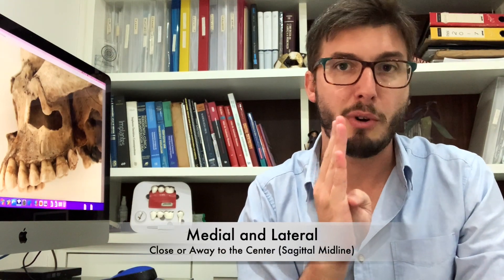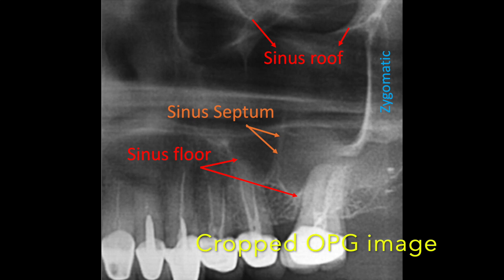We also have the medial wall of the sinus, which is the lateral wall of the nasal cavity. Note that medial means close to the center and lateral means away from the center. The roof of the sinus is the floor of the orbit. The sinus floor is usually in proximity with the roots of the molars and sometimes even premolars. The mesial extension of the sinus can go up to the lateral incisor or canine, and the distal extension can go up to the tuberosity of the maxilla.